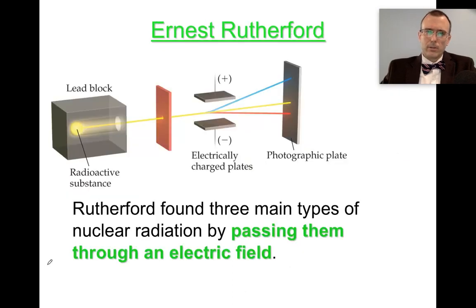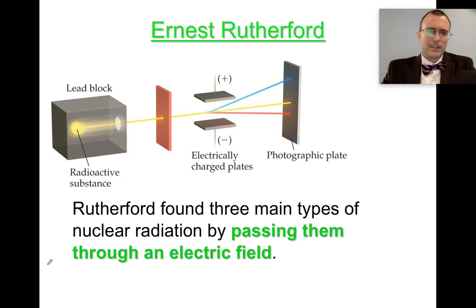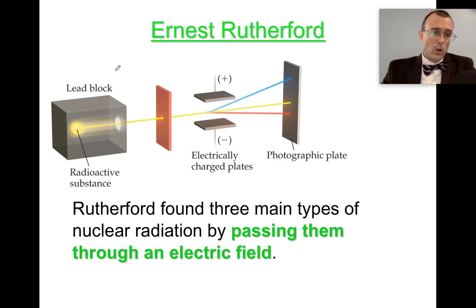Nuclear radiation was first discovered by Henry Becquerel back a little before 1900. And it was Marie Curie who discovered that it was actually affecting the atoms themselves. Ernest Rutherford did a very interesting experiment. He took some uranium, which was known to produce nuclear radiation,